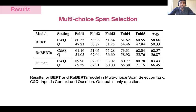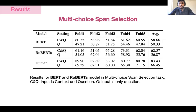Moving to multi-choice span selection, we use a BART and RoBERTa base model and report results in two settings. In the first setting (C and Q), the dialogue context is available to the model, whereas in the second setting (only Q), the dialogue context is not available and the answer must be given from the question alone. The scores are the accuracy of predicting the correct option. Not very surprisingly, models perform much better when the context is available. However, the performance of all models stands much below human-level performance.